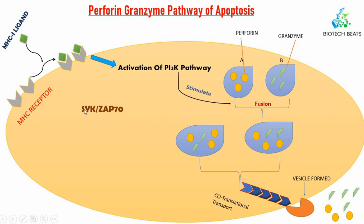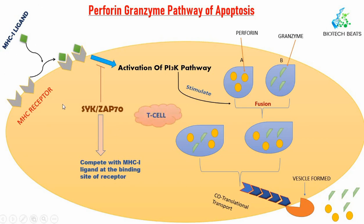There is a regulator of this process: SYKZAP70. SYKZAP70 blocks the activation of the PI3K pathway by competing with the MHC class I ligand at the binding site of the receptor. This means SYKZAP70 binds to the receptor instead of the MHC class I ligand, so activation of the PI3K pathway does not occur and no vesicle formation takes place.